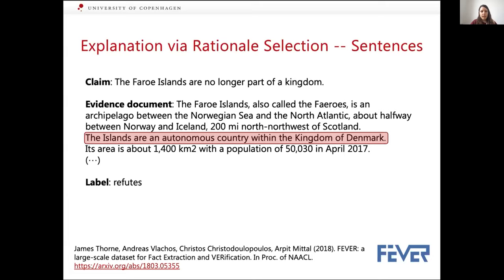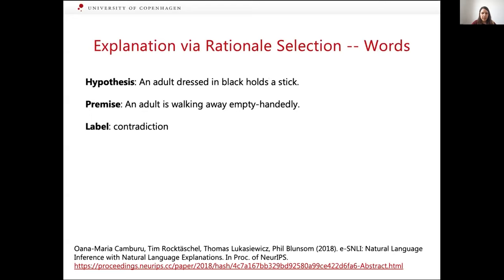This here is an example of natural language inference, which is one of the component tasks of fact-checking. If the model focuses on the last part about whether an adult is holding a stick, then it makes the right prediction for the right reasons. If it focuses on 'dressed' versus 'walking,' it doesn't make the right prediction for the right reasons.